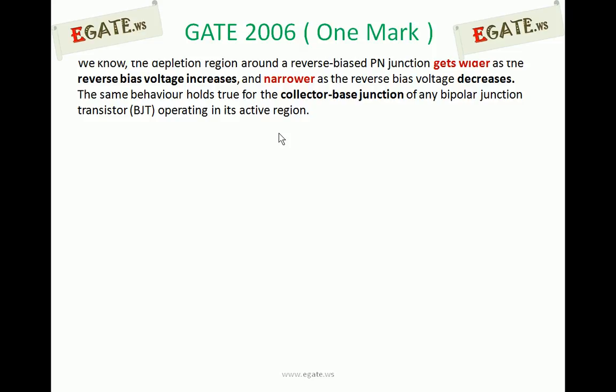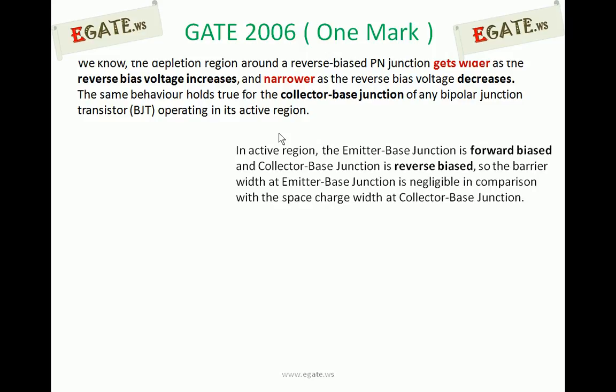The same behavior is true even for a bipolar junction transistor operating in the active region. The BJT active region is when the emitter-base junction is forward biased and the collector-base junction is reverse biased — then the BJT is said to be in the active region.